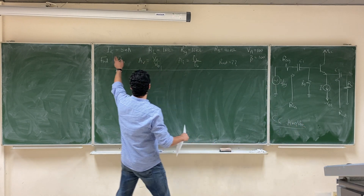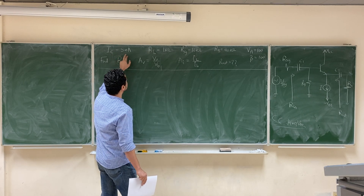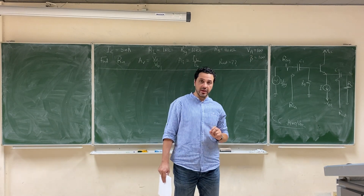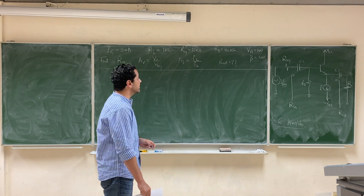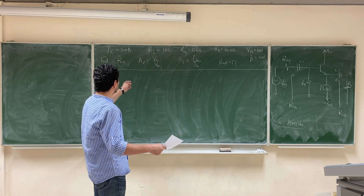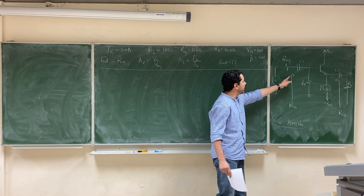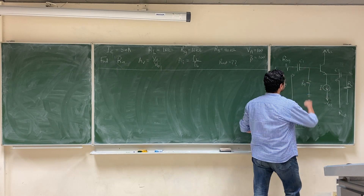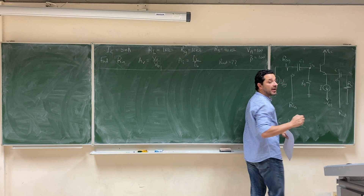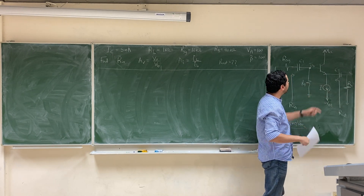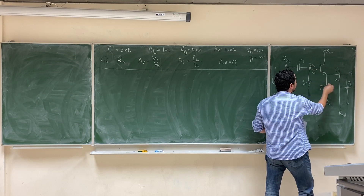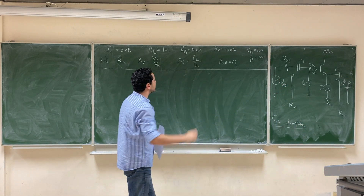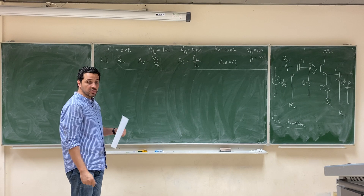Again, it's given IC — the DC value of the collector current — and all the resistors are given. VA is 100 and beta is 100, which means that we will not ignore RO here; we have to take RO into account. The first step is to find Rin looking at the base, find Vout, find the voltage gain Vout over Vbase, and find the current gain between the load current and Ibase.